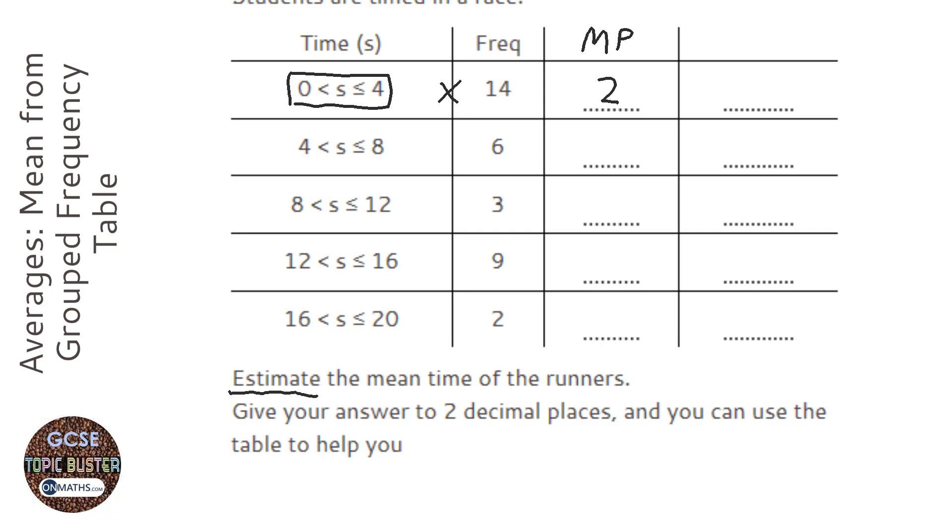So, we find the midpoint of each of the groups, and a way of doing this is just adding the lowest and highest value together and dividing it by 2. Or, just having a look, 4 to 8 will be 6, 8 to 12, halfway will be 10, 12 to 16, halfway will be 14, and 16 to 20, halfway will be 18.